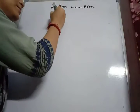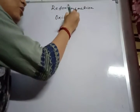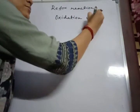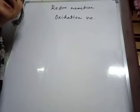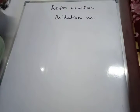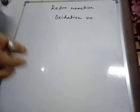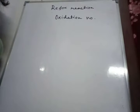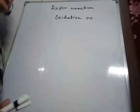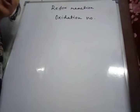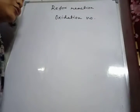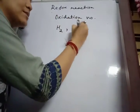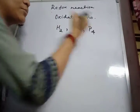Some rules are there for the calculation of the oxidation number. The first rule is that the oxidation number of an atom in its free state or elemental state is taken as zero. For example, the oxidation number of hydrogen in H2, sulfur in S8, and phosphorus in P4 is taken as zero.